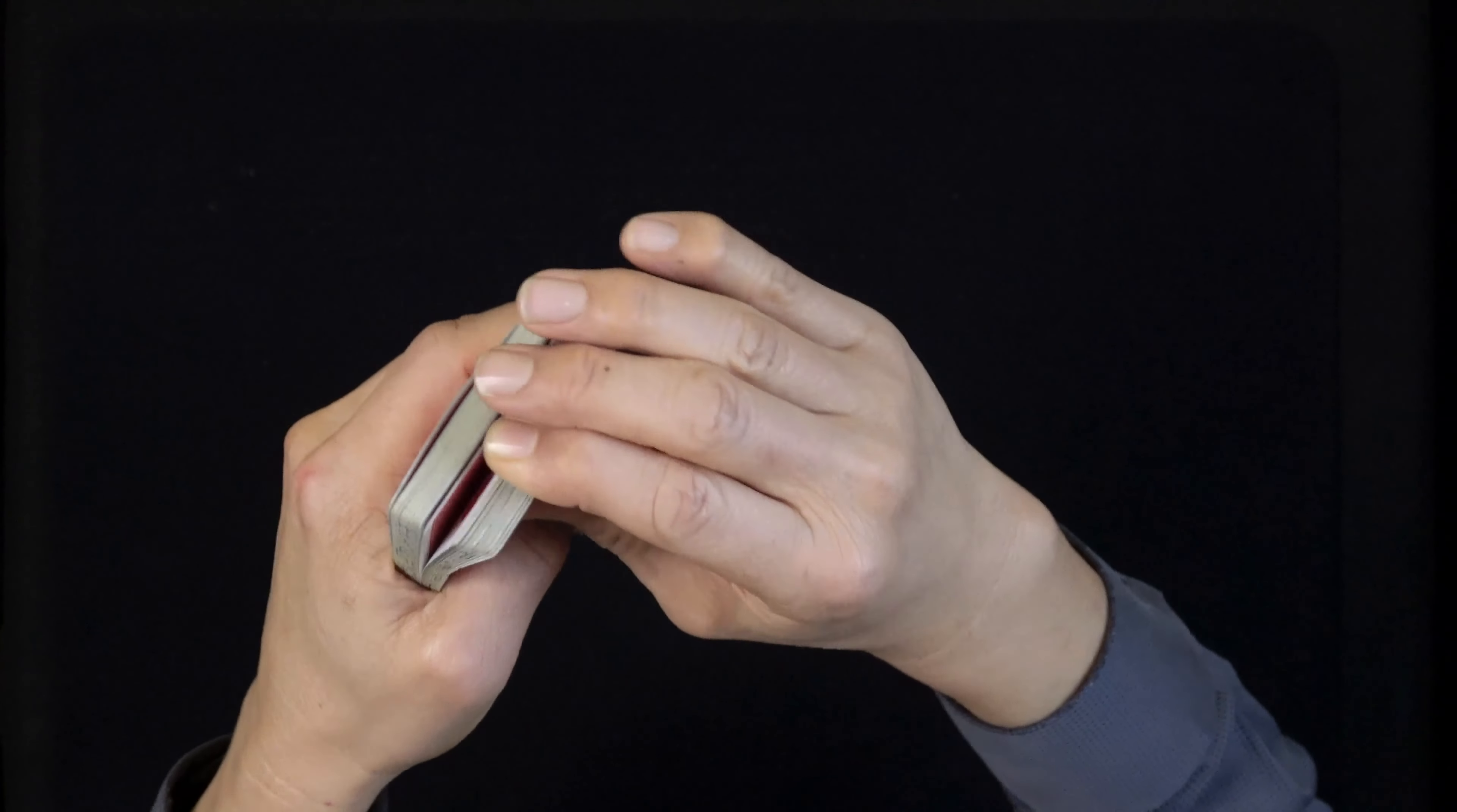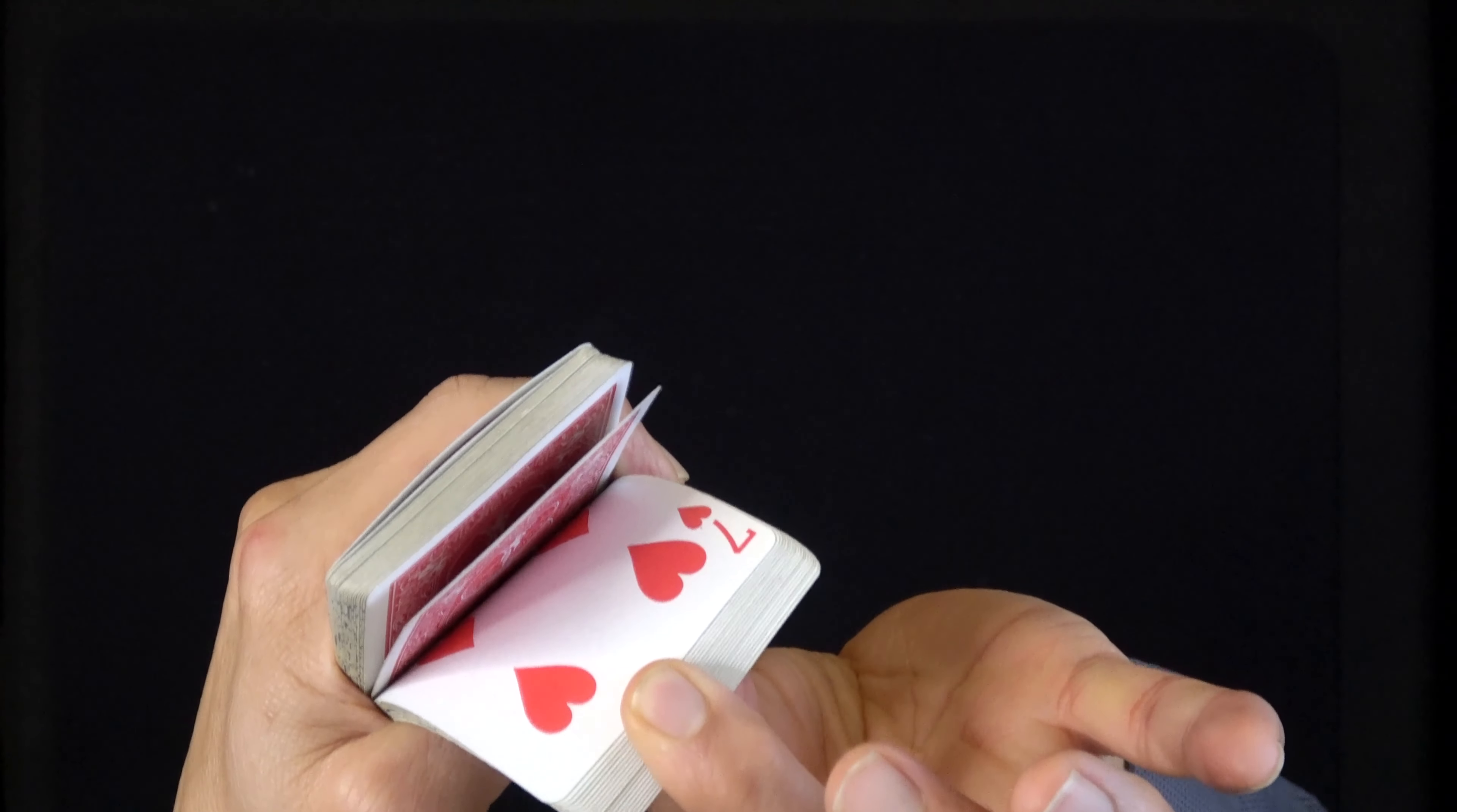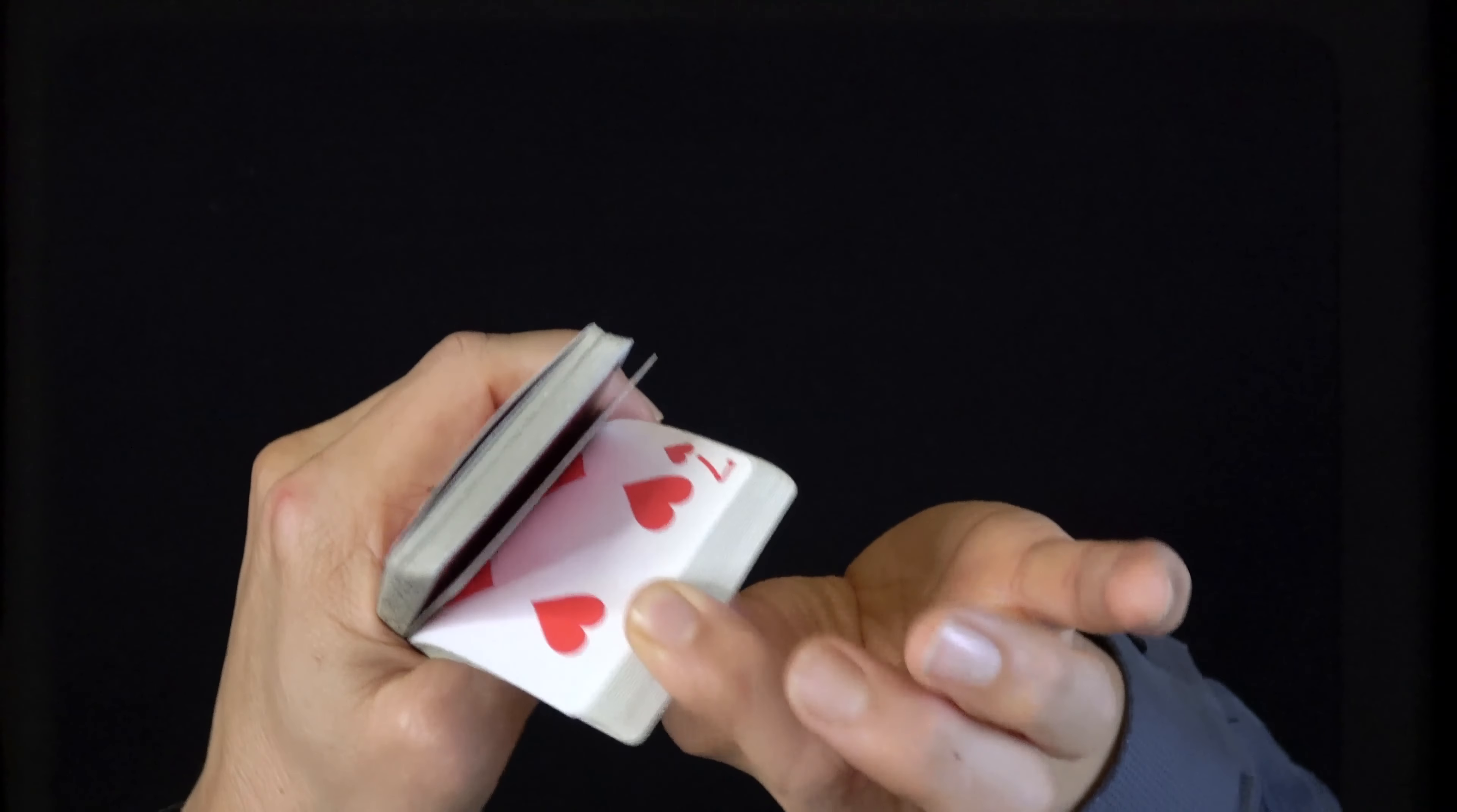So you can do this two ways. You can have the spectator, as I did in the performance, as I'm running through, have them say stop and you try and time it. When they say stop you want to show that card. You can do this the easy way and that would be, remember I'm beveling the deck here, but you do it the easy way. You can just say, hey, we're just going to go through the deck and there's a card right there.